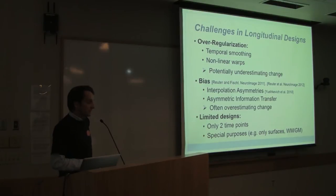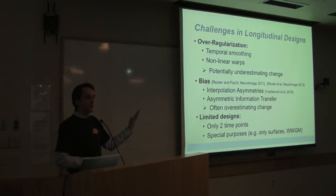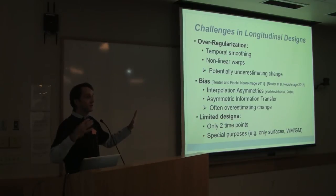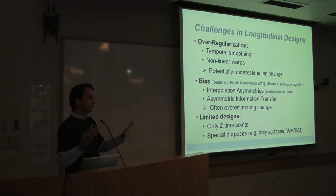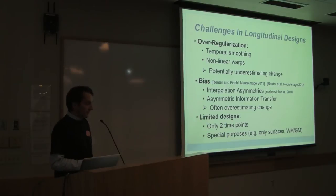Then there is another big problem: bias. Sometimes you don't treat all time points the same. You take one time point as the target — usually the baseline — and map follow-up time points into that baseline space. That's problematic because the baseline image is not mapped anywhere while the follow-up images get mapped and resampled, introducing smoothing only to the follow-up images. So you will find some change even if there is no change — this leads to an overestimation of change.